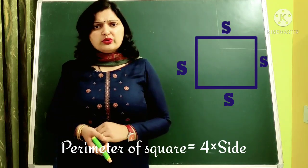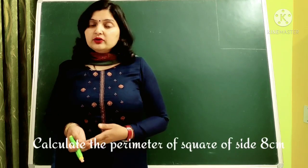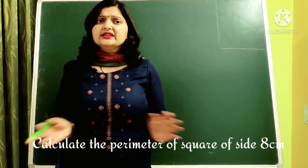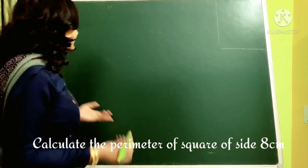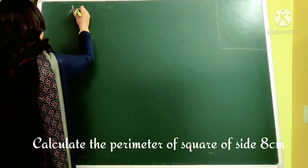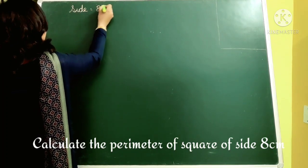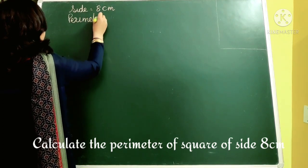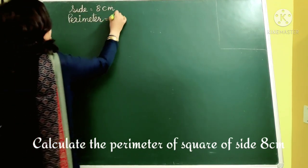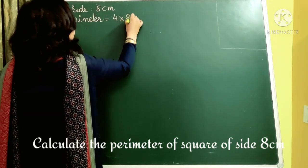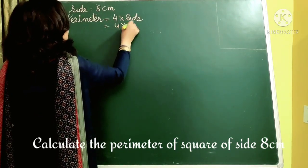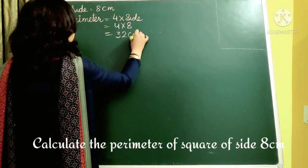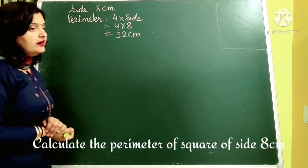Let us take a short question: calculate the perimeter of a square of side 8 cm. You have a square whose side is 8 cm and you have to calculate its perimeter. Using the formula 4 times side: 4 into 8 equals 32 cm. So 32 cm is the perimeter of this square.